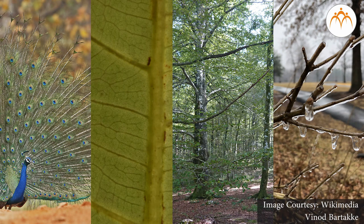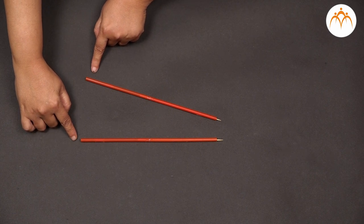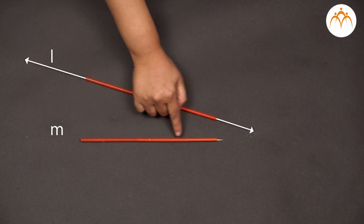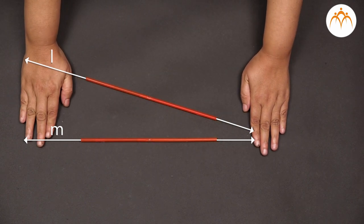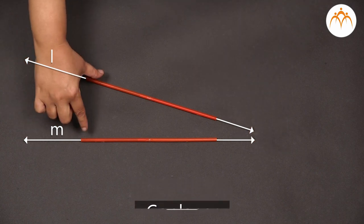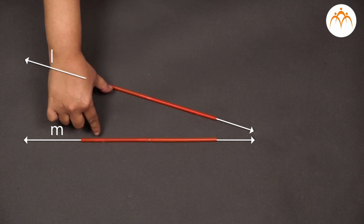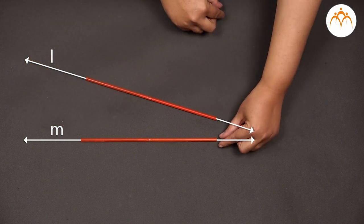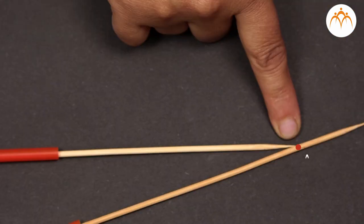Let us look at similar examples of intersecting lines that we find in nature. We can easily understand the concept of intersecting lines with the help of two straws. These two straws represent two lines, line L and line M. These two lines lie in the same plane, hence are called coplanar, but the distance between them is not equal — it is increasing, as you can see — so that when extended further, they intersect each other at point A.